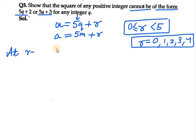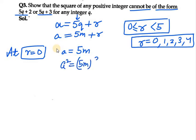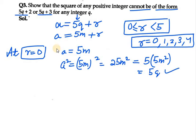At r equals 0, a becomes 5m. Squaring the term: a squared equals (5m) squared equals 25m squared. Taking 5 as common, the remainder in the bracket can be written in the form of q. So it is in the form of 5q, and it can be a perfect square.